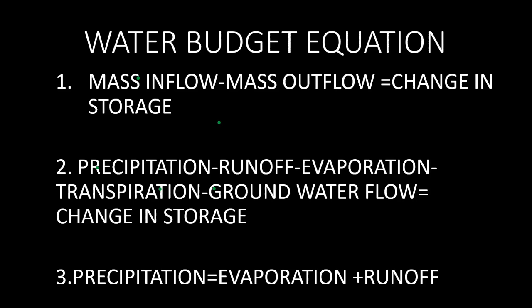Now comes the water budget equation, also called the hydrologic equation. It is based on the law of conservation of mass: mass inflow minus mass outflow equals change in storage. Simply, precipitation equals evaporation plus runoff. In detail: precipitation minus runoff minus evaporation minus transpiration minus groundwater flow equals change in storage, meaning all precipitation is conserved as the sum of runoff, evaporation, transpiration, groundwater flow, and storage.